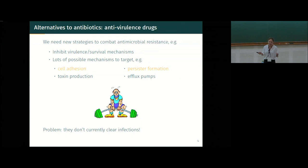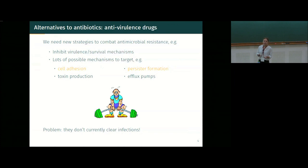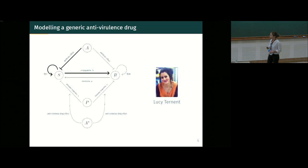There is a big problem: in the lab, anti-virulence drugs don't work to 100% efficacy yet. Most animal model work shows they can weaken and attenuate infections but can't actually clear them yet. We wanted to answer from a mathematical point of view what we need to do to make these treatments more effective. This led to our first model, done by Lucy Turnant, an MSc student in my group a few years ago.